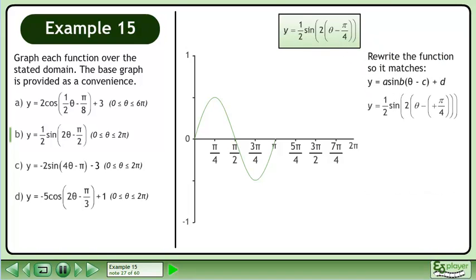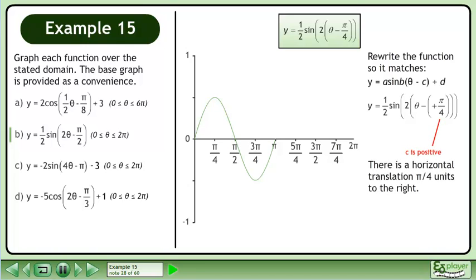Rewrite the function so it matches y equals a sine(bθ - c) + d. The c parameter is positive π over 4. There is a horizontal translation, π over 4 units to the right. Translate the graph π over 4 units right.